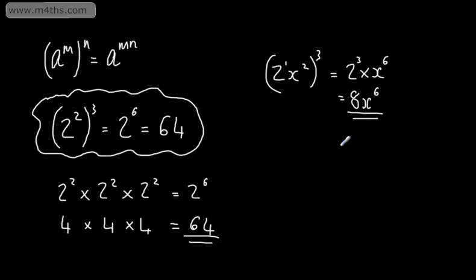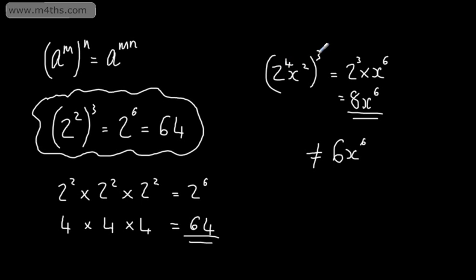A common error is that students write this as 6x to the power of 6 — that is not the case. We are multiplying the powers, not the coefficient value. So for example, if this were 2 to the power of 4, we would end up with 2 to the power of 12.